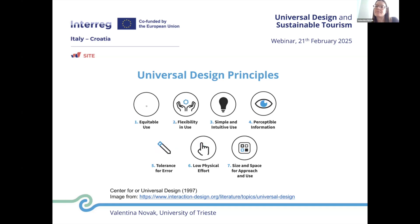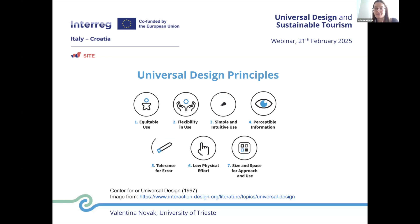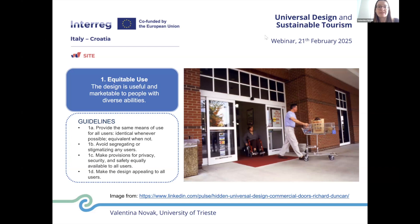We will look at the definition and the guidelines provided by the Universal Design Center and a little example. For the first principle, equitable use, the guidelines are: provide the same means of use for all users — identical whenever possible, equivalent where not — avoid segregating or stigmatizing any users, make provisions for privacy, security and safety equally available to all users, and make the design appealing to all users.